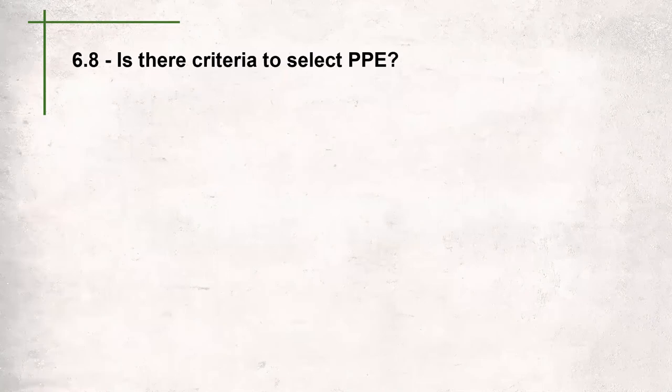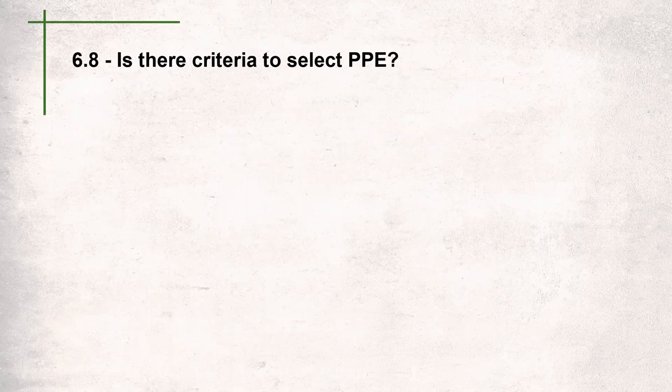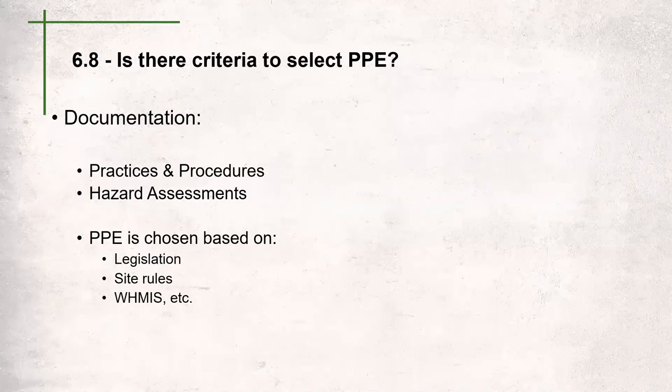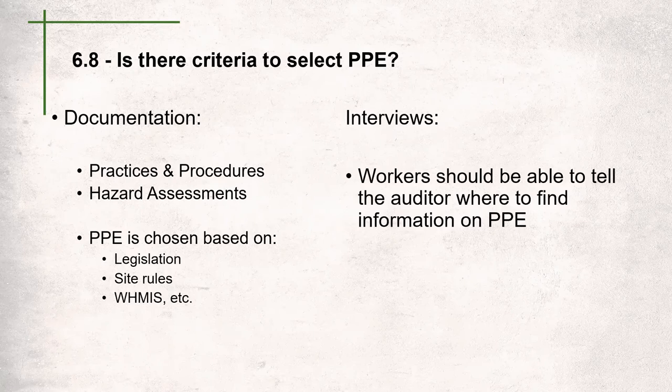The next question is: is there criteria to select PPE? The auditor will look to determine what criteria was used to select PPE for particular tasks. The company should include in practices and procedures things like hazard assessments, and PPE should be chosen based on legislation, site rules, or specific legislation like WHMIS. During interviews, workers should be able to tell the auditor where to find information on PPE requirements.